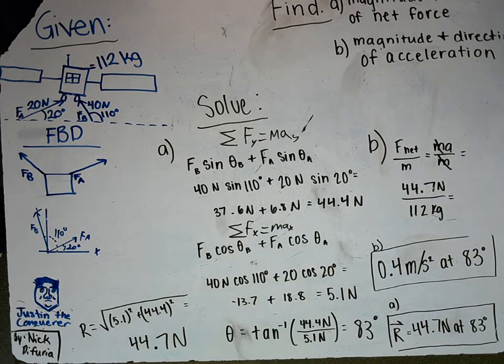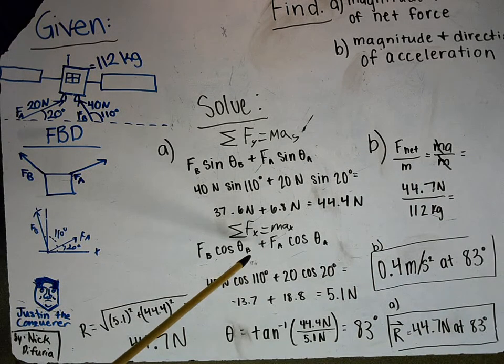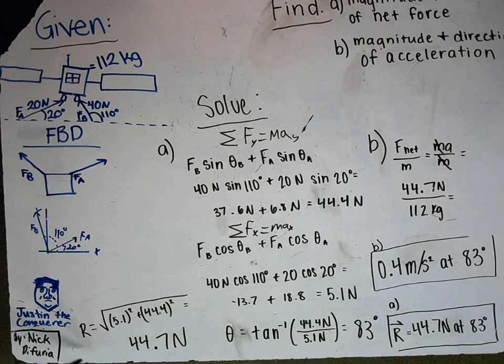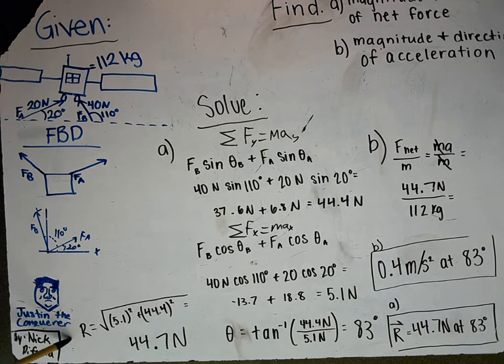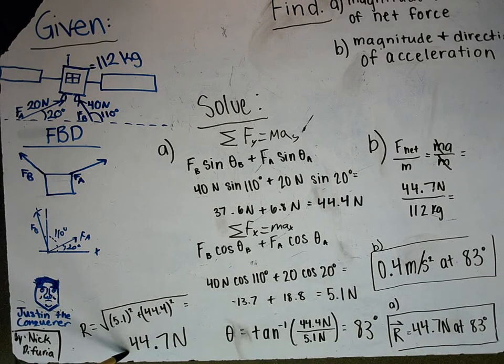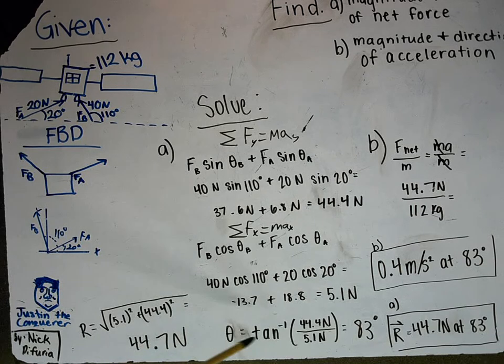Now we have the X and Y components of the total force. We can use F net, the net force. The net force when you use the Pythagorean theorem is 44.7 Newtons. Then the angle using inverse tangent—